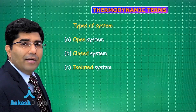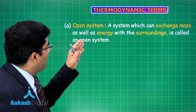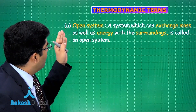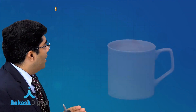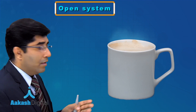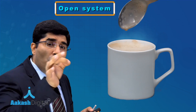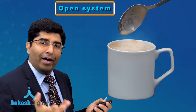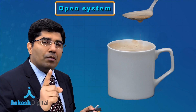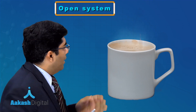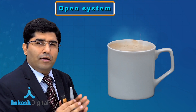There are three types of systems: open system, closed system, and isolated system. An open system is one which can exchange both mass and energy with the surroundings. Consider a cup of tea — you can put more tea in the cup, and you can take out some tea as well, so mass transfer is possible.